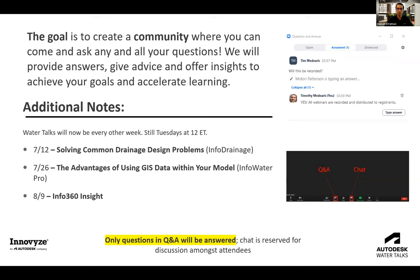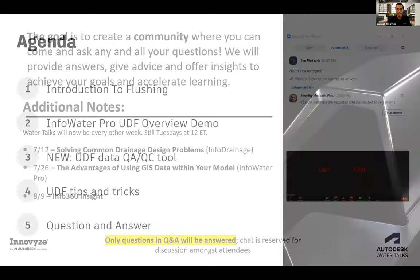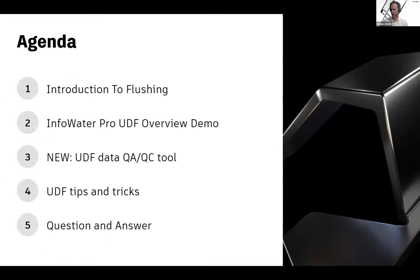In July, we're going to have two Water Talks: one revolving around InfoDrainage on July 12th, solving common drainage design problems, and then July 26th covering the advantages of using GIS data within your model, primarily in InfoWater Pro. Early August, we'll have a Water Talk on Info360 Insight. Also, this session will be recorded and all of you will have access to it through the same Zoom link that was sent to you, available within 24 hours.